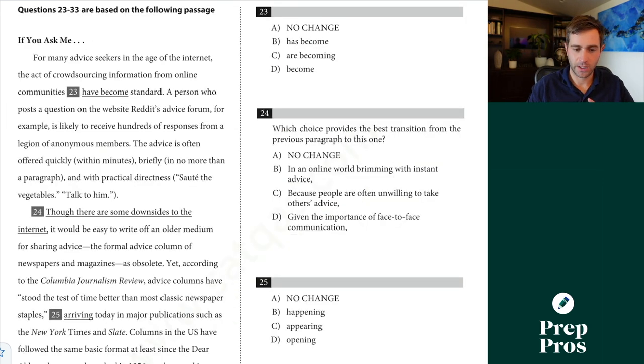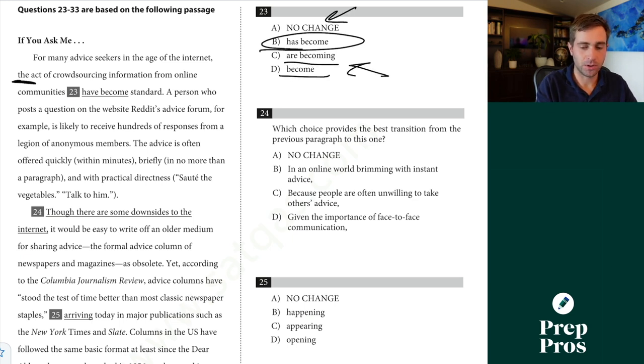All right, passage three. For many advice seekers in the age of the internet, the act of crowdsourcing information from online communities blank. Well, this is one video I'm going to kind of link up above where you can check out a subject verb agreement one, but for 23 here, what we're really focusing on is this is our subject, we would say the act has become, but there's a little hack. These are all plural, so you can tell B must be correct. This is all your prepositional phrase you need to get rid of, so the test doesn't trick your ear.